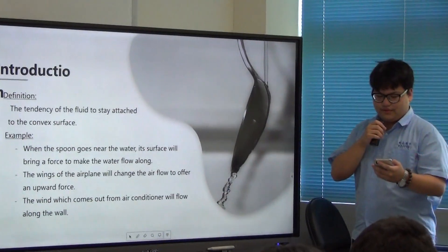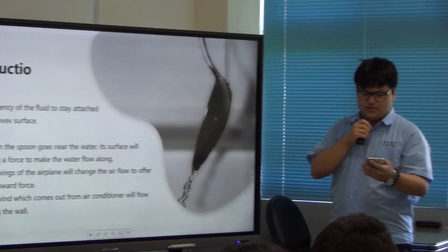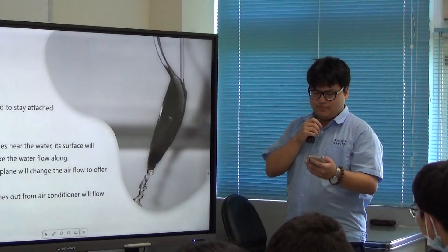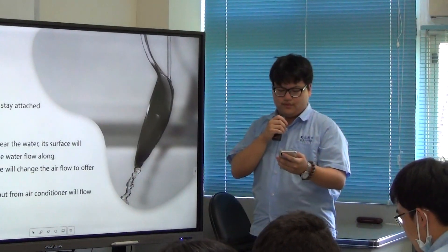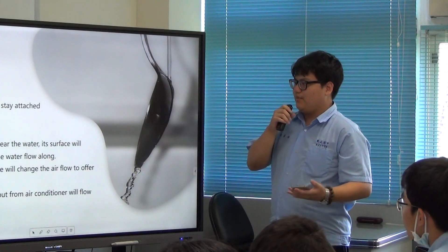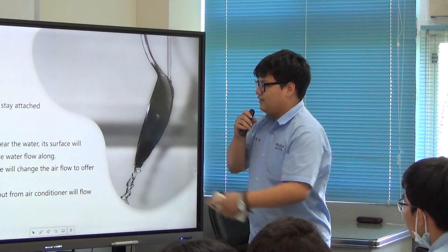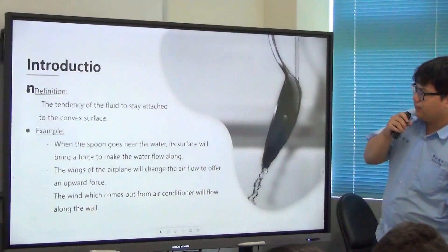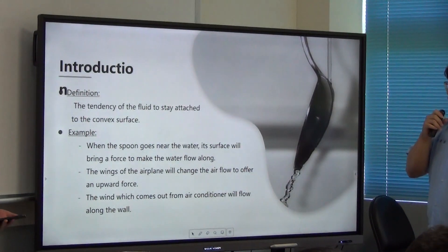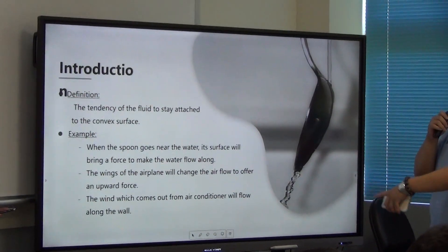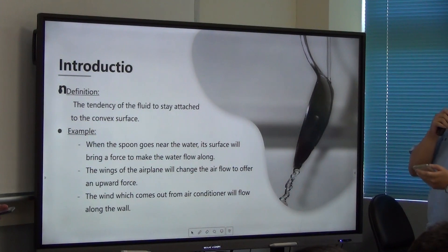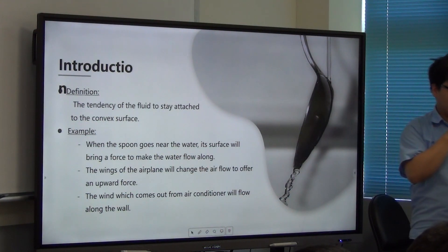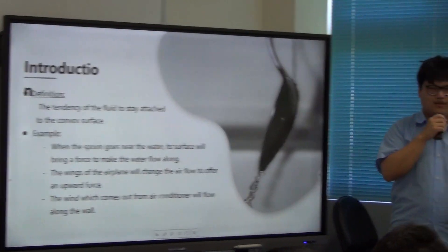We can see how Coanda effects work in an interesting experiment. And this principle can also apply to different designs. For example, the wing of the airplane will change the air flow to open an upward force, and the wind which comes out from air conditioner will flow along the wall. Coanda Effects seems to be complicated but it is often used in our life.